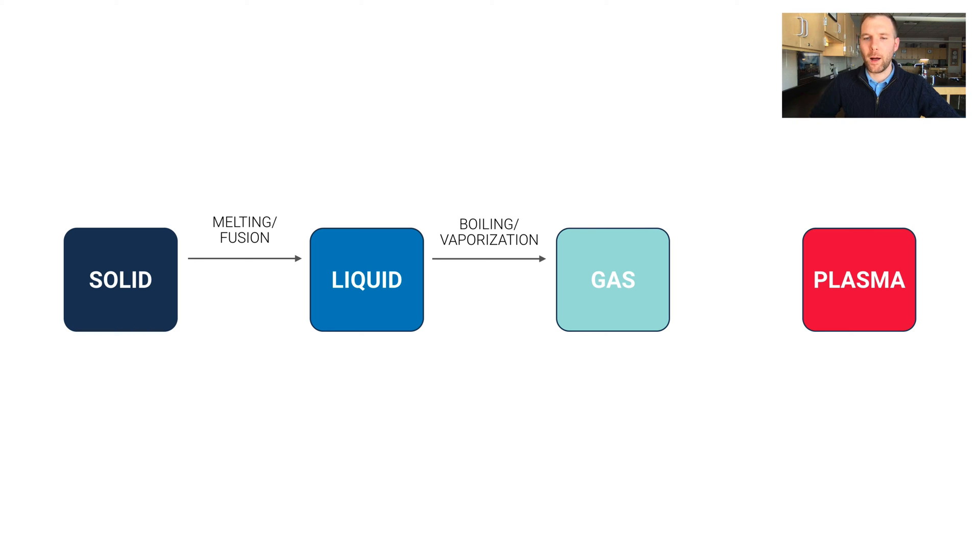Actually, this is something you may not be familiar with, but you can go directly from a solid to a gas, and that's something called sublimation. A good example of this is dry ice. Dry ice is solid carbon dioxide. And when you add some warm water to it, or just heat it even with just the room temperature air, it immediately turns from solid carbon dioxide to carbon dioxide vapor, which is the gas phase of carbon dioxide.